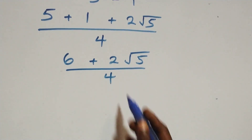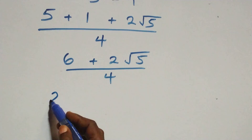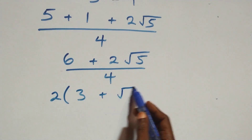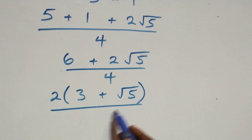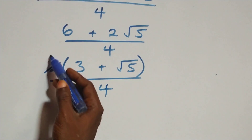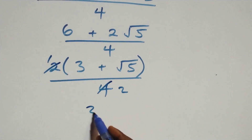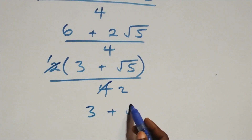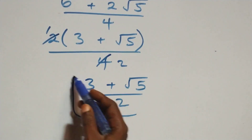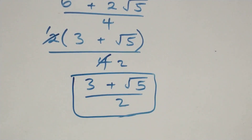We factor 2 from the numerator: 2(3 + √5) over 4. Simplifying, 2/4 = 1/2, so the final answer from Method 1 is (3 + √5) / 2. Now let's verify using the second method.